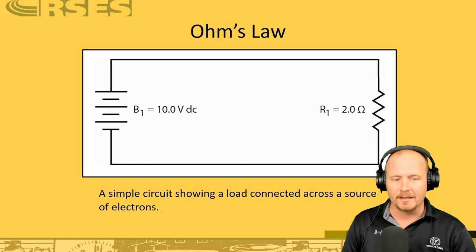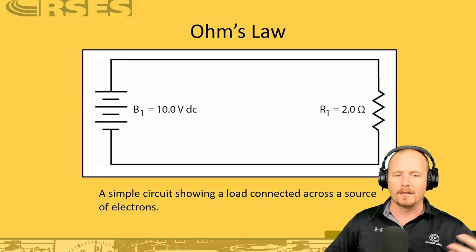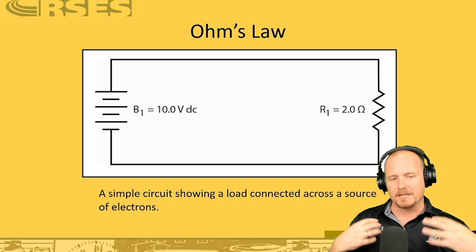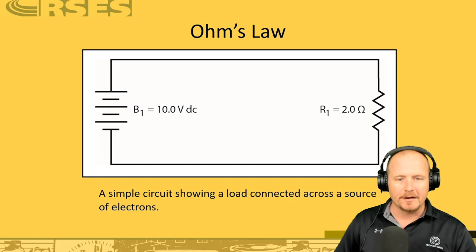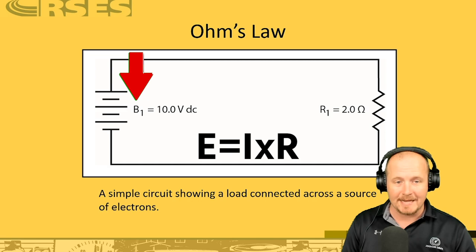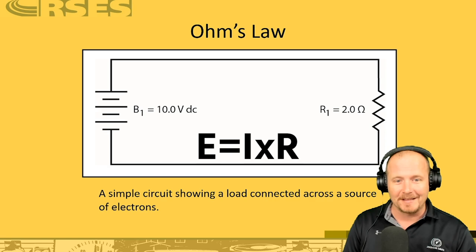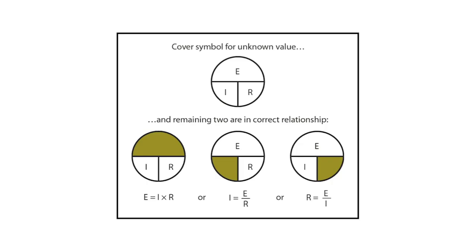When you get into alternating current, you have something called power factor, and inductive loads cause resistance to not remain consistent. Knowing how to do the math is simple. Here we have a fixed 10-volt source and two ohms. Working Ohm's Law: E equals I times R, so 10 equals I times 2 — that's five. We would be drawing five amps at two ohms resistance with a 10-volt DC power supply. A common chart lets you cover the variable you're solving for: to solve for resistance, divide voltage by current. As long as you have the other two values, you can solve for the variable you cover.